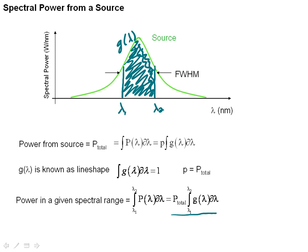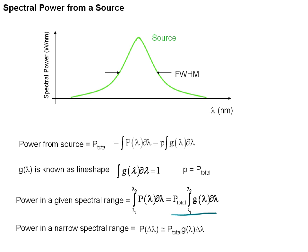Many times you want to find the power at a specific wavelength, which makes things simpler. In a narrow spectral range, you just want to know the power over that fairly narrow spectral region with width delta lambda. That's just the total power times the line shape function at the wavelength of interest, times the width delta lambda. This approximation assumes the source puts out a pretty much constant amount of power over a narrow wavelength range.